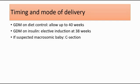Moving on to the timing and mode of delivery: if GDM is well-controlled under diet control, we can allow delivery up to 40 weeks, and we do not allow post-date delivery. If the mother has GDM controlled on insulin, we will do elective induction of labor at 38 weeks.